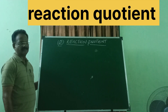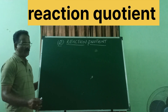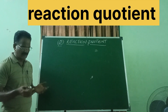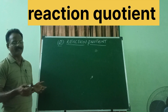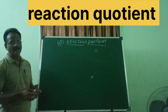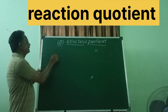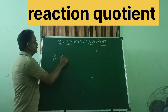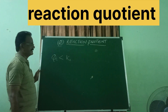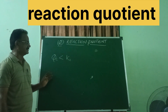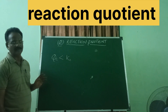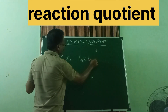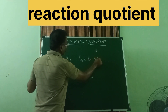Let us now determine how we can tell whether the forward reaction or backward reaction is taking place by using the reaction quotient. If reaction quotient Qc is less than the equilibrium constant Kc — where Kc is the equilibrium constant calculated using concentrations — then the reaction will proceed from left to right.